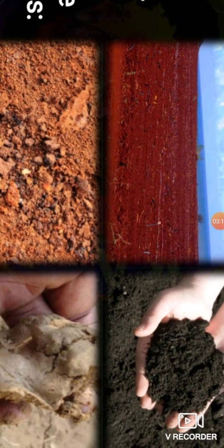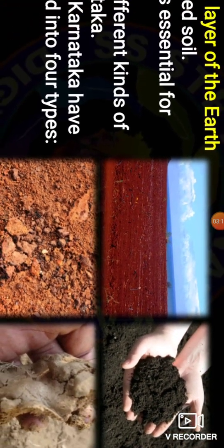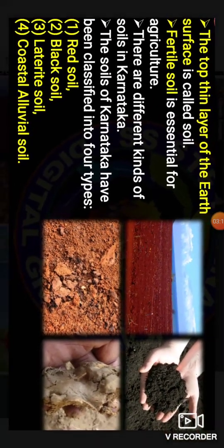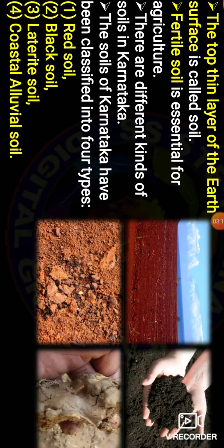There are different kinds of soil in Karnataka. The soils of Karnataka have been classified into four types: red soil, black soil, laterite soil, and coastal alluvial soil. Let us see how these four types of soil are distributed in Karnataka.